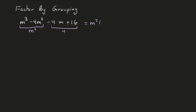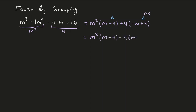This gives us m squared times (m minus 4) plus 4 times (minus m plus 4). I notice I have an m minus 4 and a minus m plus 4 — these differ by a negative sign. So I can factor out a minus one from the second term, transforming this into m squared(m minus 4) minus 4(m minus 4), which gives us the common factor (m minus 4), resulting in (m squared minus 4)(m minus 4).